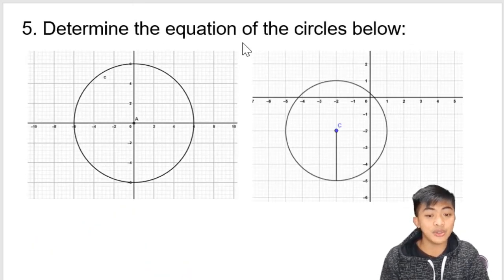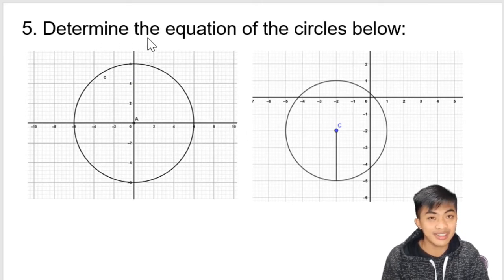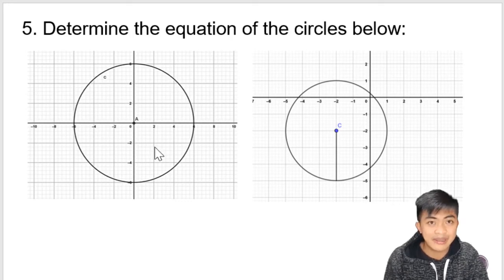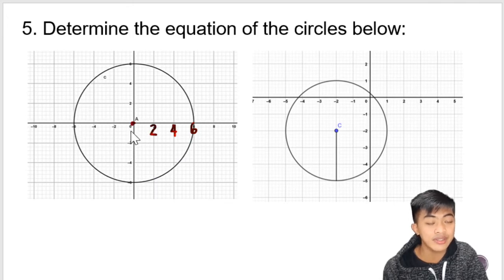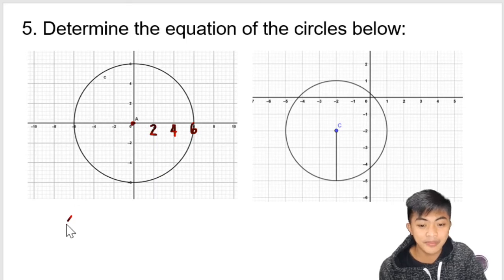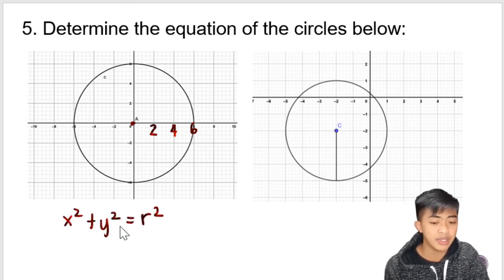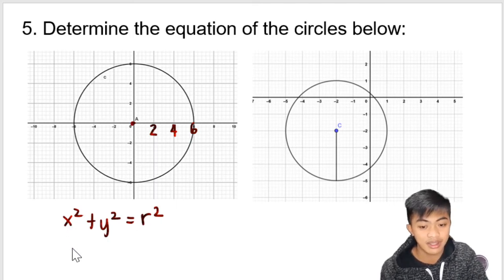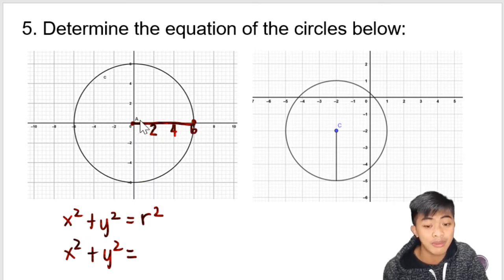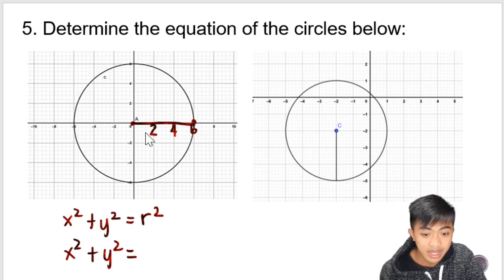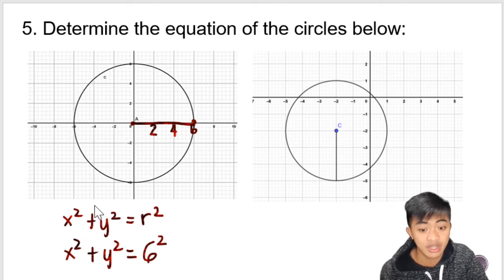Now, what if the graph is given and you are asked to determine its equation? This is easy — you just have to determine where the center is located and count the number of units from that center to any point on the circle to get the radius. In the first graph, we can see that the center is at the origin, so the equation will look like x squared plus y squared equals r squared. We count the units from the center to a point on the circle — that is 6 units. So the radius is 6 units, but we have to square it.